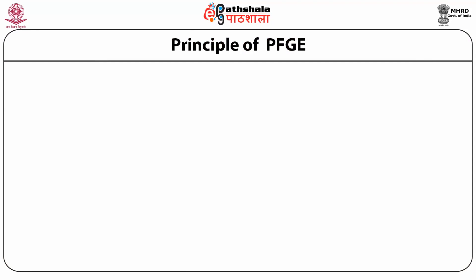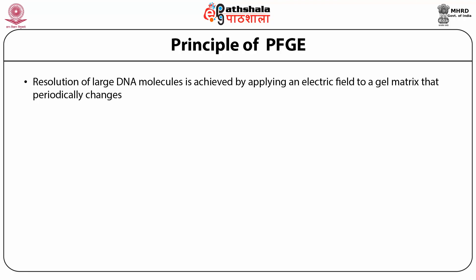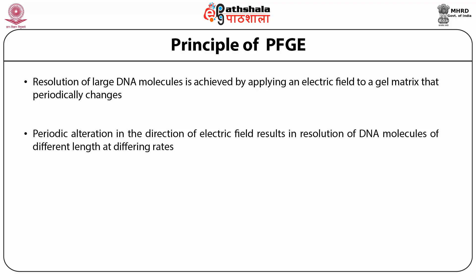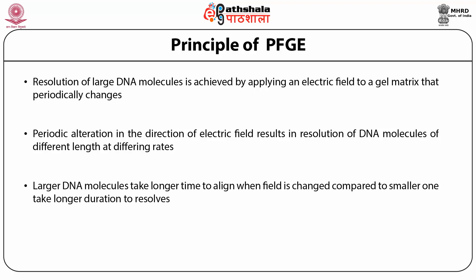The fundamental principle of Pulse Field Gel Electrophoresis is that resolution of large DNA molecules is achieved by applying an electric field through a gel matrix that periodically changes. Instead of a constant electric field, we have a periodically changing electric field—not only is the field changed, but also the direction of the electric field is changed. Large DNA molecules take longer time to align when the field is applied this way, while smaller ones resolve faster, so larger bands are on top and smaller bands run at the bottom.